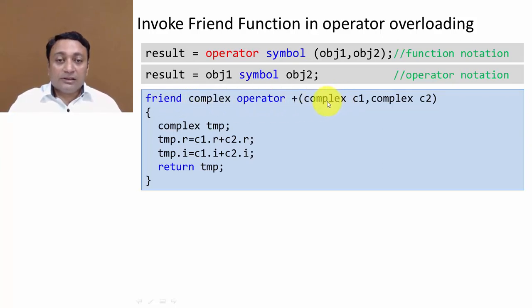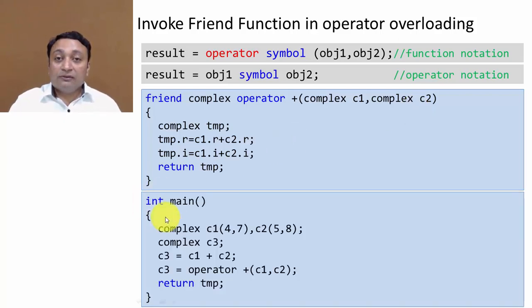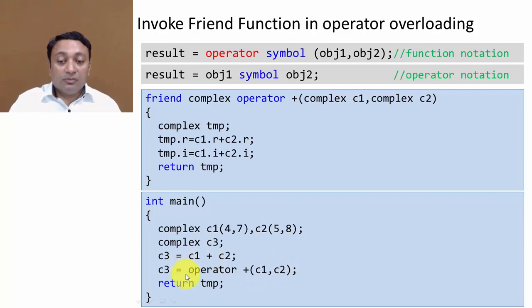In our previous case we passed only one object as argument, but in the case of a friend function we must pass two objects as arguments. This is because a friend function is not a member of the class, so it will not be called by an object. It takes both objects as arguments and is called by its name or using operator notation.